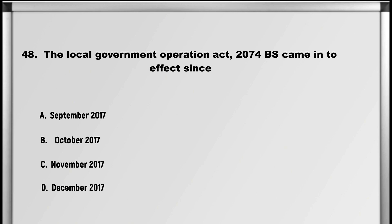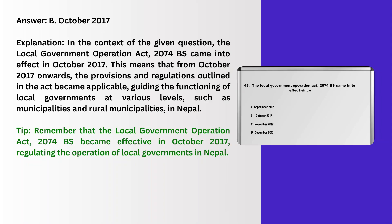Next up is question number 48: The local government operation act 2074 BS came into effect since: A. September 2017, B. October 2017, C. November 2017, D. December 2017. Answer: B. October 2017.